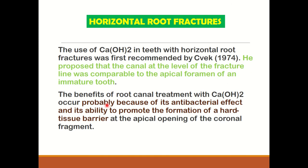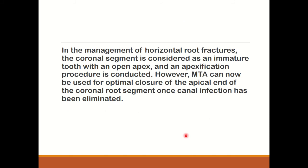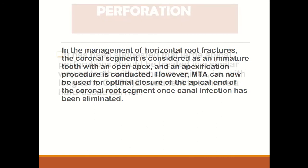In case of horizontal root fracture, the use of calcium hydroxide in teeth with horizontal root fracture was first recommended by Spang in 1974. He proposed that the canal at the level of the fracture line was comparable to the apical foramen of an immature tooth. The benefit of calcium hydroxide is its antibacterial effect and ability to form a hard tissue barrier at the apical opening of the coronal fracture. The coronal segment is treated as an immature tooth with open apex and the apexification procedure is performed. MTA can now be used for optimal closure of the apical end of the coronal segment once canal disinfection has been achieved.